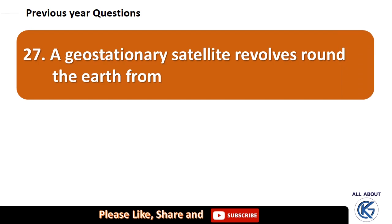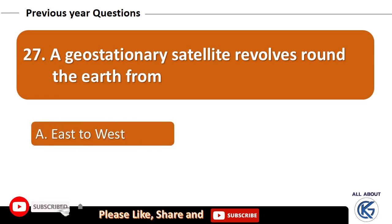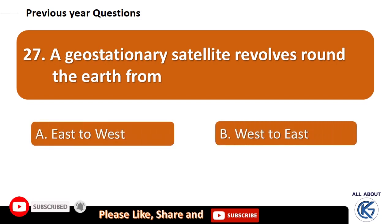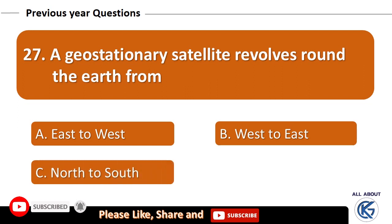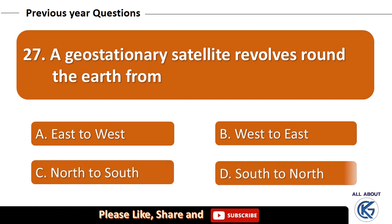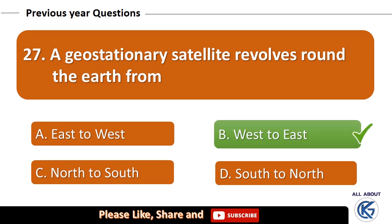A geostationary satellite revolves around the earth from: east to west, west to east, north to south, or south to north? The right answer is west to east.